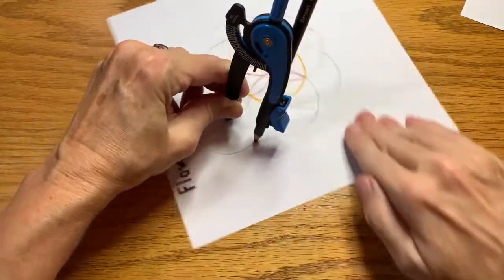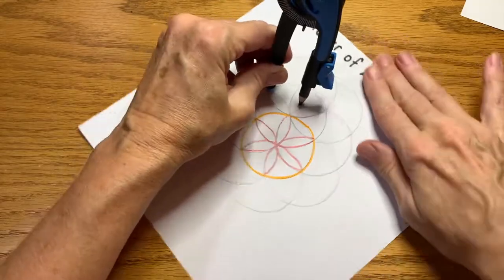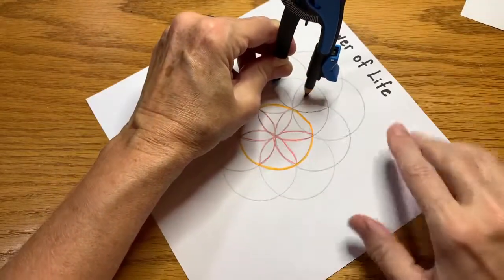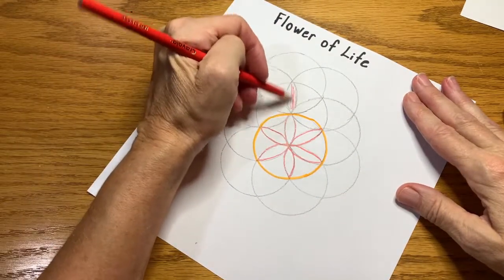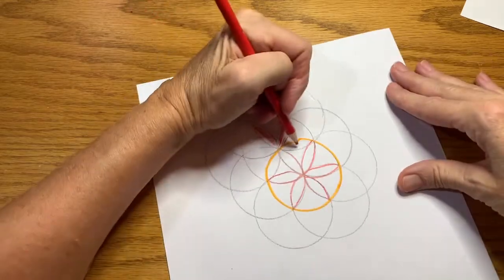It's helpful to be consistent and kind of go around in the same order so that you don't miss any and you'll just keep doing this, filling up the paper and creating lots of beautiful flowers of life.